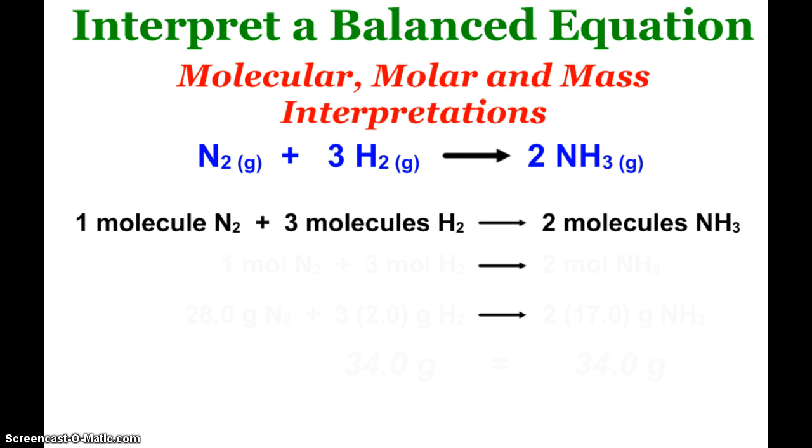On the molecular level, I can read this as saying a molecule, one molecule of nitrogen, reacts with three molecules of hydrogen to produce two molecules of ammonia.